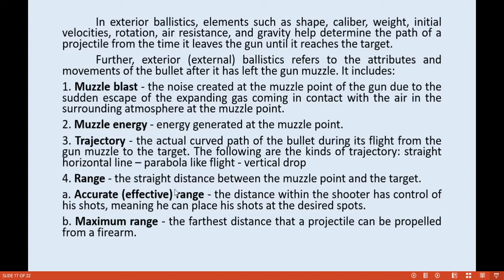Accurate or effective range is the distance within which the shooter has control of his shots, meaning he can place shots at the intended spot. Maximum range is the farthest distance that a projectile can travel from a firearm. Effective range means the shooter can control where he aims and can hit the intended target.